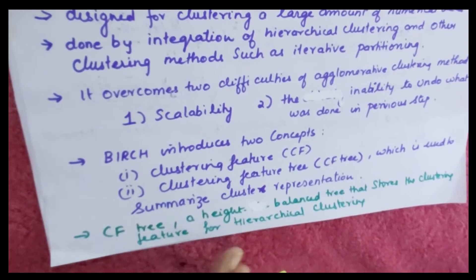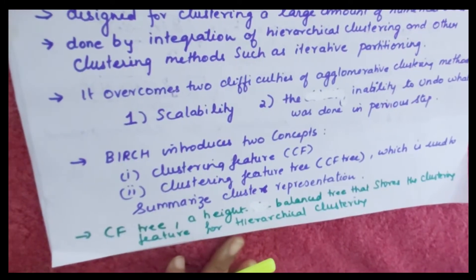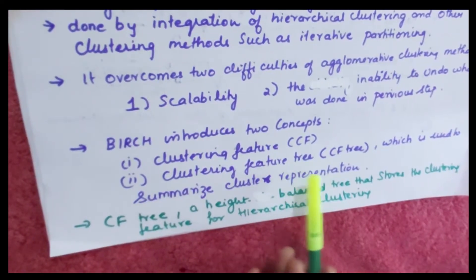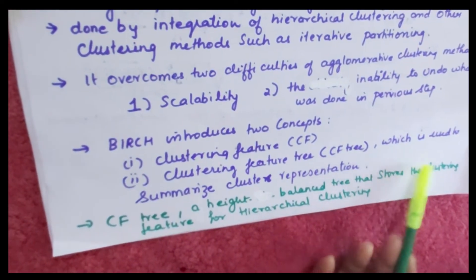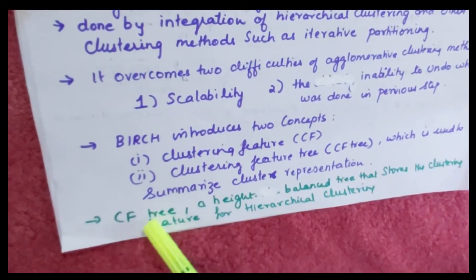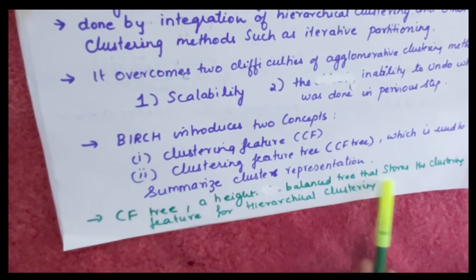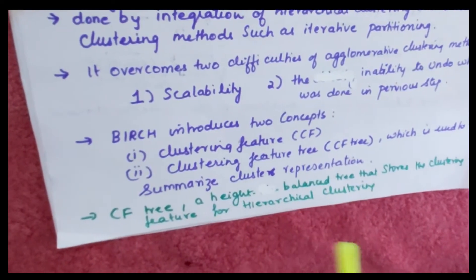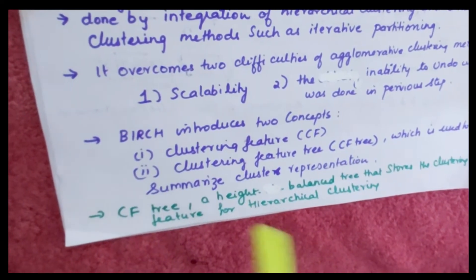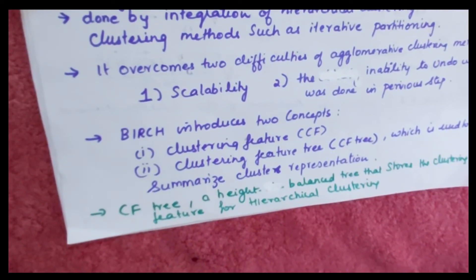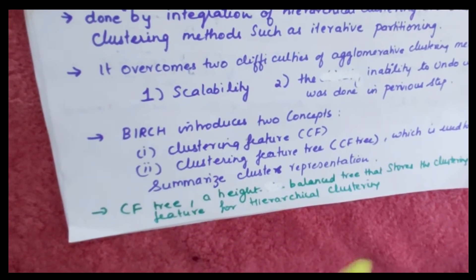BIRCH introduces two concepts for this. First is clustering feature. Second is CF tree, which is used to summarize the cluster representation. Before I go into detail about clustering features and CF tree, I have to discuss some measurements of clustering.